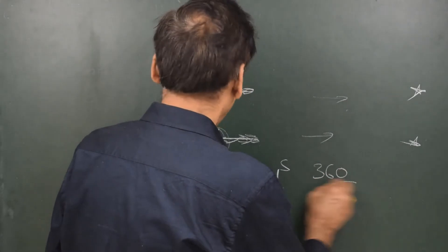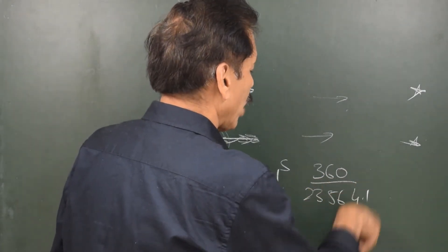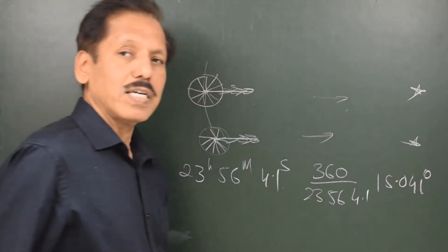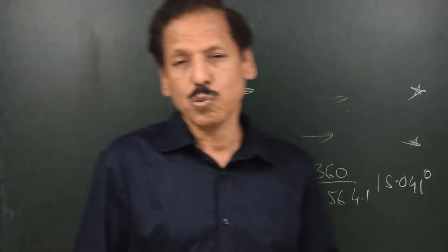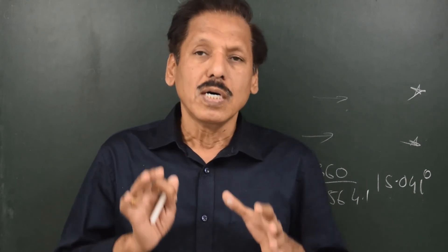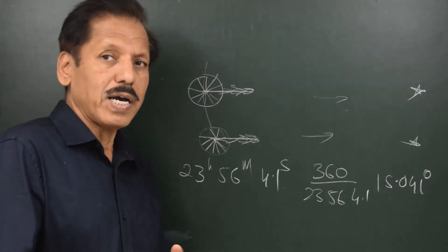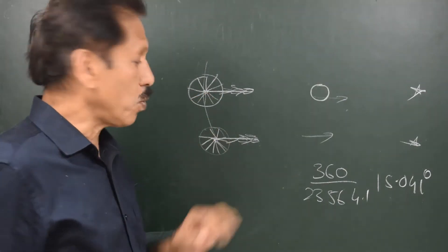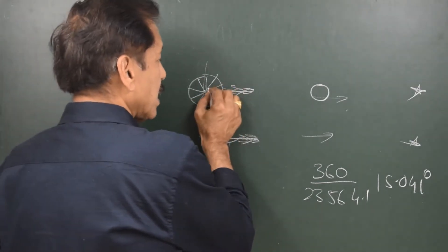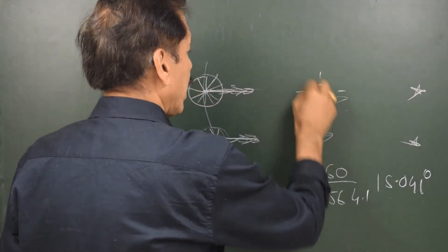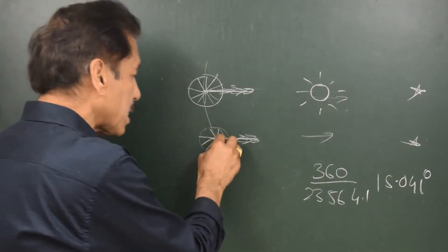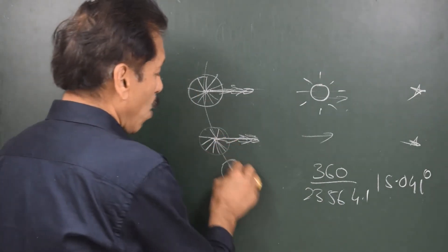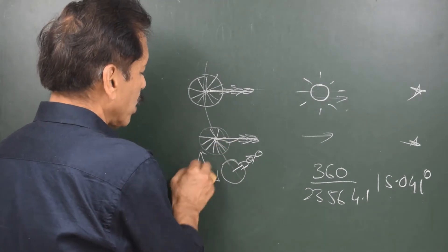The Earth takes 23 hours 56 minutes 4.1 seconds to spin once in space by 360 degrees. Dividing 360 by 23h 56m 4.1s gives 15.041 degrees, or 15 degrees 2.46 minutes — that is the true rate of spin of the Earth in space. That is why we have a fixed increment table. However, this observer notes that yesterday the Sun was also on the meridian, and the Sun is not yet back on the meridian; the Earth will have to move a little further along her orbit.